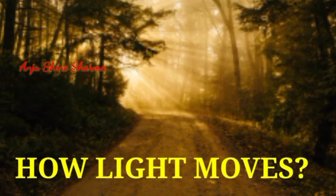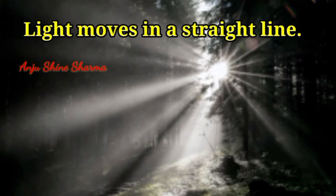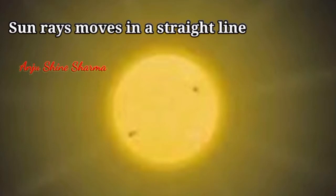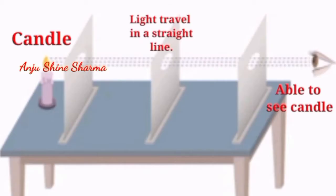How does light move? Light moves in a straight line. When we shine a torch in darkness, we observe a straight beam of light in the dark area. Similarly, we observe a straight beam of sunlight entering a room through a window. This property of light traveling in a straight line can be demonstrated by a small activity: take three cardboards of equal size, make a hole in each, put them in a straight line on a table, fix a candle and light it, then try to see the flame through the holes.